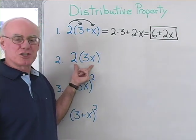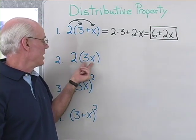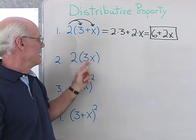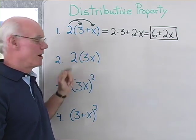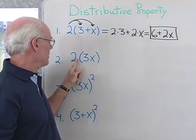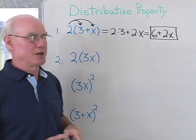Here's an expression that might look similar but it's really not. This is 2 times 3 times X instead of 2 times 3 plus X. You wouldn't apply the distributive property to this expression because multiplication does not distribute over multiplication.